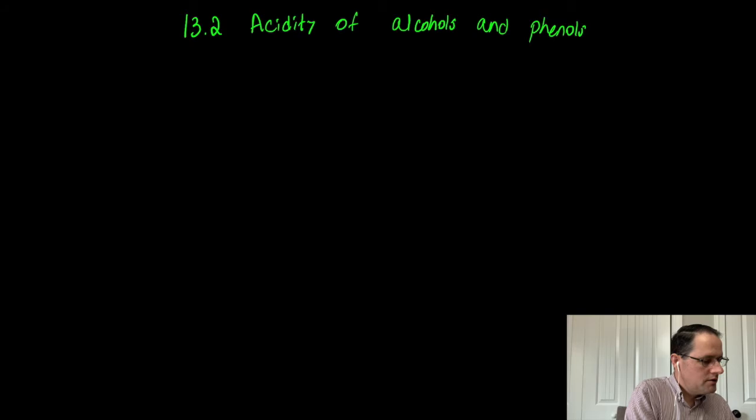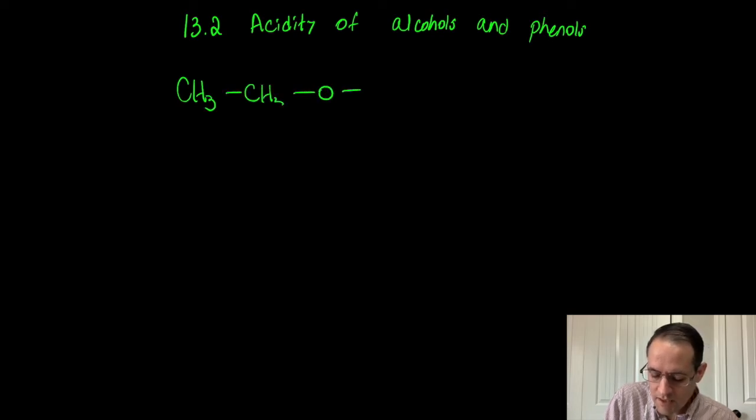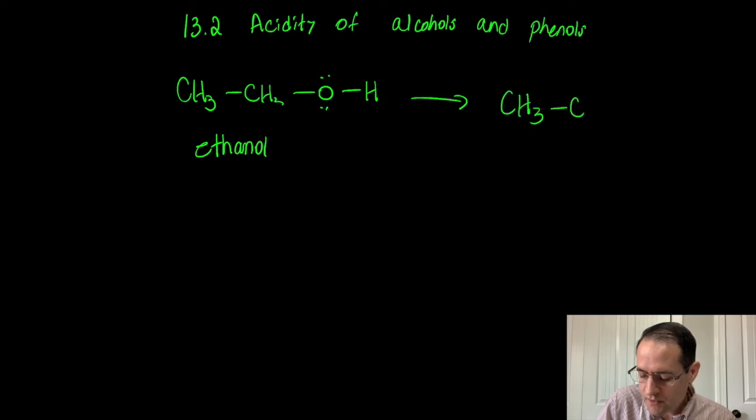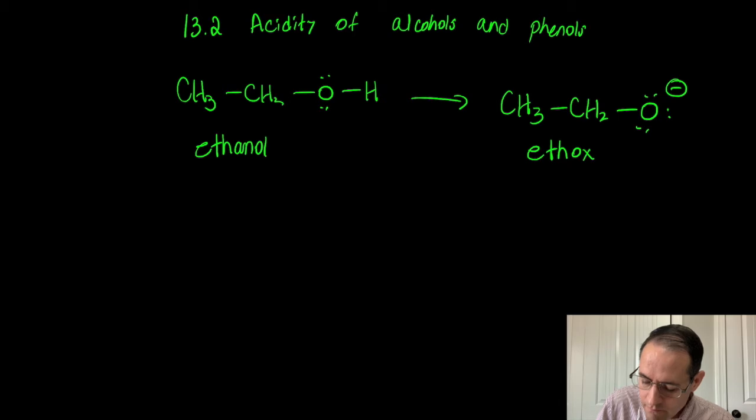I think we covered that in chapter three. So let's talk about the alcohol functional group. Because the hydrogen here is attached to a rather electronegative atom, if we remove that proton in an acid-base reaction, we'll have a negative charge on the oxygen atom that is somewhat stabilized because oxygen is an electronegative atom and likes to have negative charge. So this is called ethanol. And if we form the conjugate base of ethanol, this is called ethoxide.